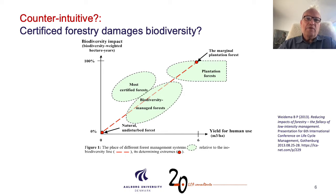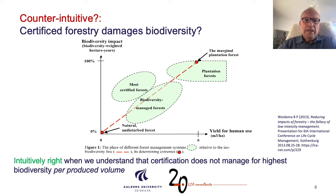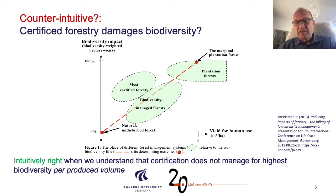Therefore, the conclusion is that the best thing you can do is to buy from plantation forests, because there you get more biodiversity. The more you can buy in terms of products with the same biodiversity value, the more forest you can leave to be natural and undisturbed. High yields is actually not such a bad idea if you can then leave other areas free. So it becomes intuitively right that certified forestry has a problem — certification does not manage for high biodiversity per produced volume; it may manage per hectare, but we need certified forestry to manage per produced volume.